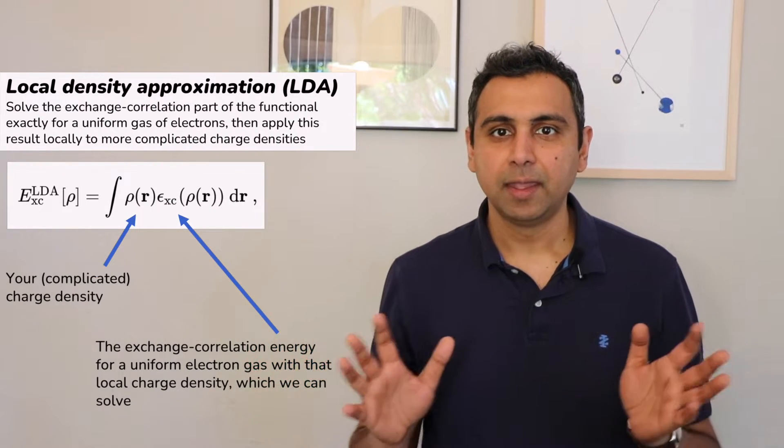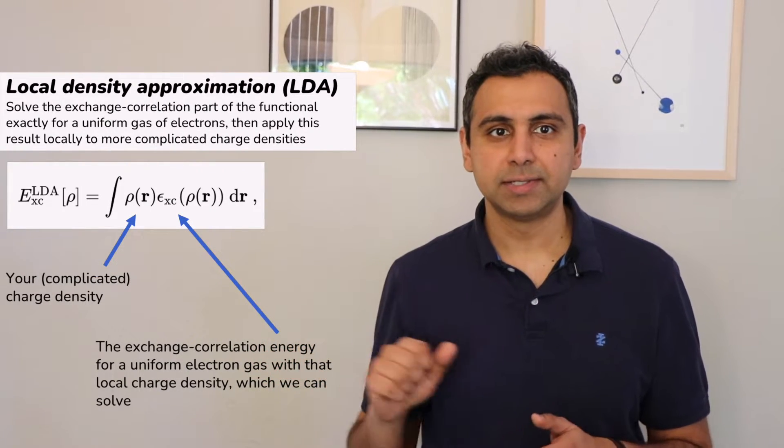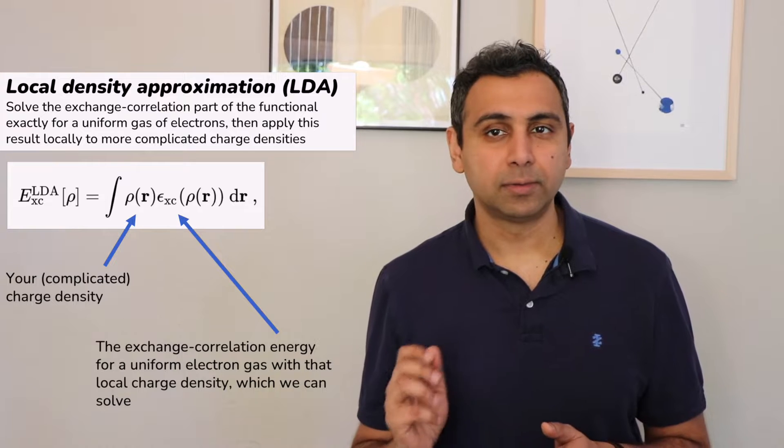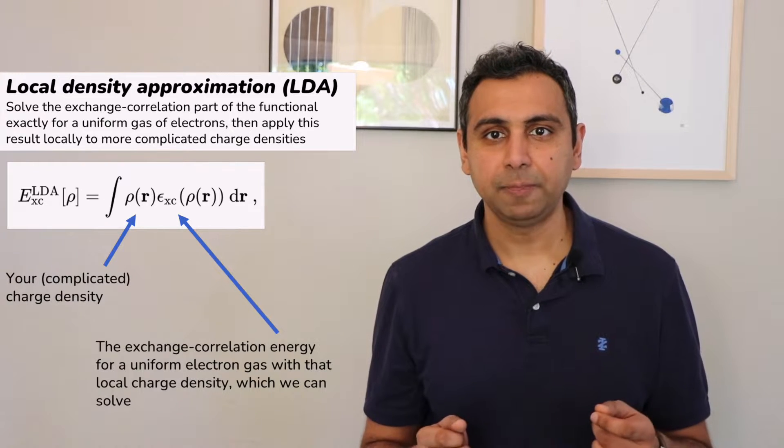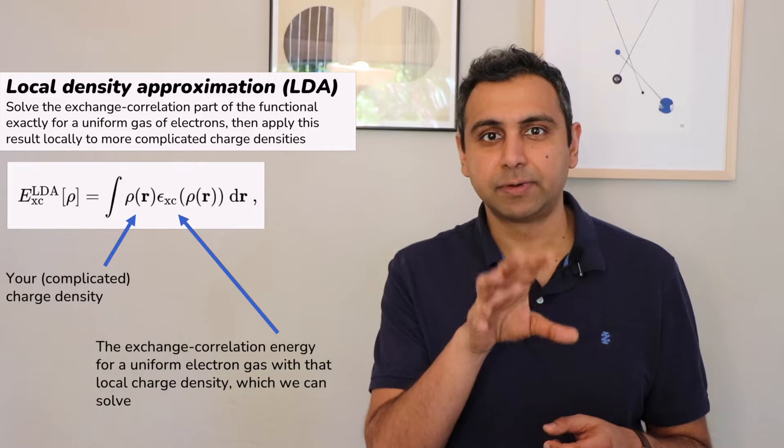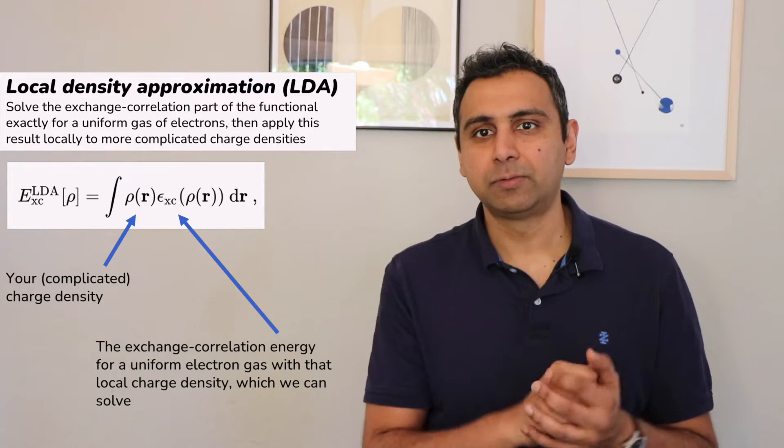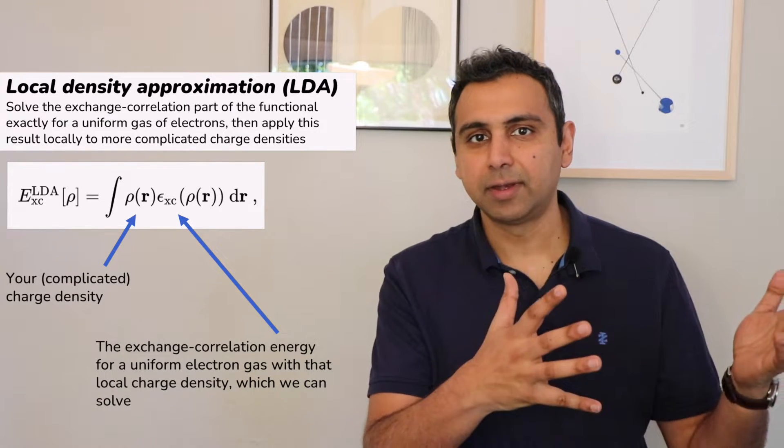For example, one can solve for the exchange and correlation energies of a uniform gas of electrons, and then if you have a more complex charge density you can use something called the local density approximation, or LDA, which looks at the charge density in every location of space for your material and just pretends that you have a uniform gas in that region and just adds everything up.